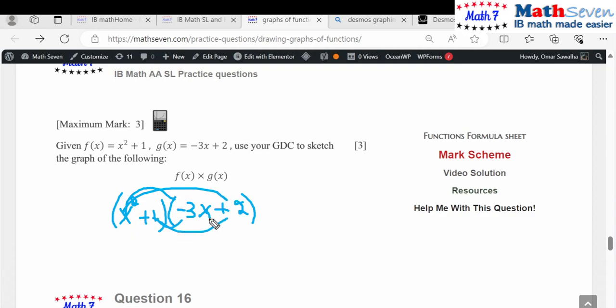So x squared times minus three x is going to be minus three x cubed, and x squared times two is two x squared.